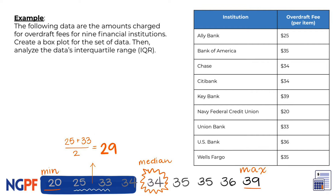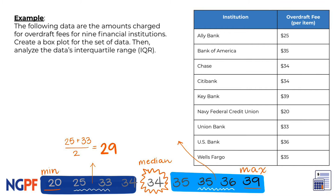Then we can find the third quartile by doing the same thing on the right side, and the average of these two middle numbers of 35 and 36 is 35.5.